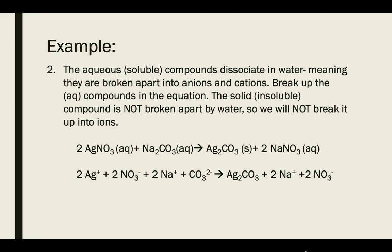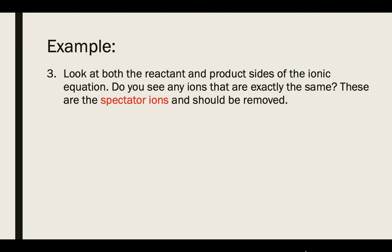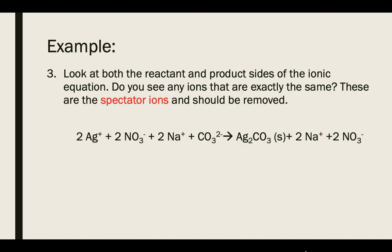Silver carbonate stays solid, so we leave it alone and do not pull it apart at all. The sodium nitrate product is broken apart, and because there are two sodium nitrates, that gives two sodium ions and two nitrate ions. After forming the full ionic equation, we look for anything that is exactly the same on both the reactant and product sides. Those are the spectator ions. The nitrate ions on both sides are identical, as are the sodium ions on both sides, so those are the spectator ions that are removed from the equation.